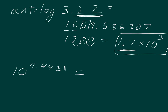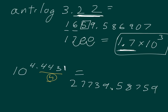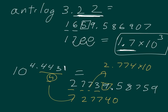Let's do the second one: 10 to the 4.4431. That gives me a calculator lie of 27739.58759. I have 4 decimal places here, so I should have 4 sig figs: 1, 2, 3, 4. Round on the basis of that 9. Can't destroy place value, so: 27740. In scientific notation: 2.774 times 10 to the 4th — 4 sig figs, 4 decimal places.